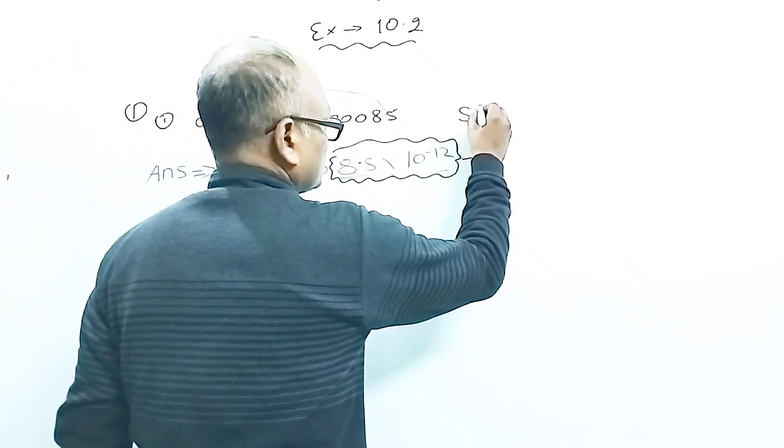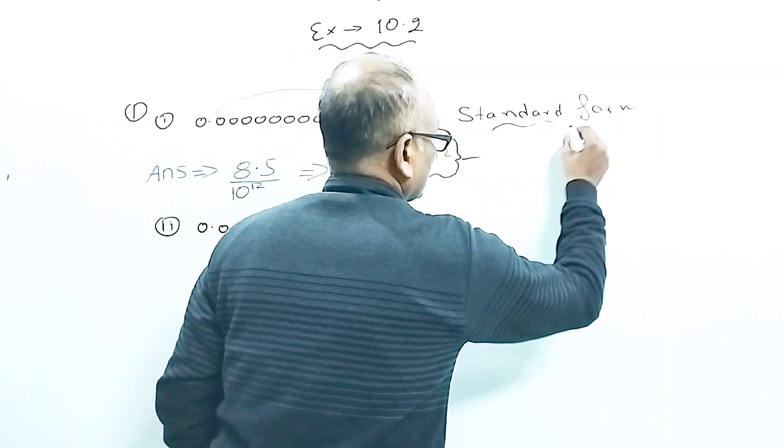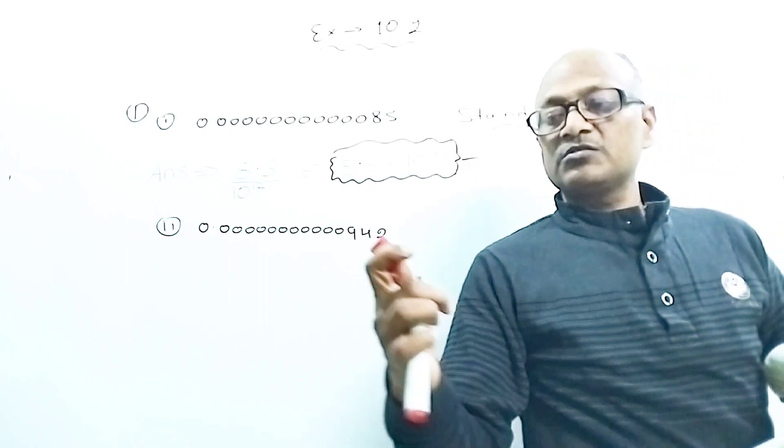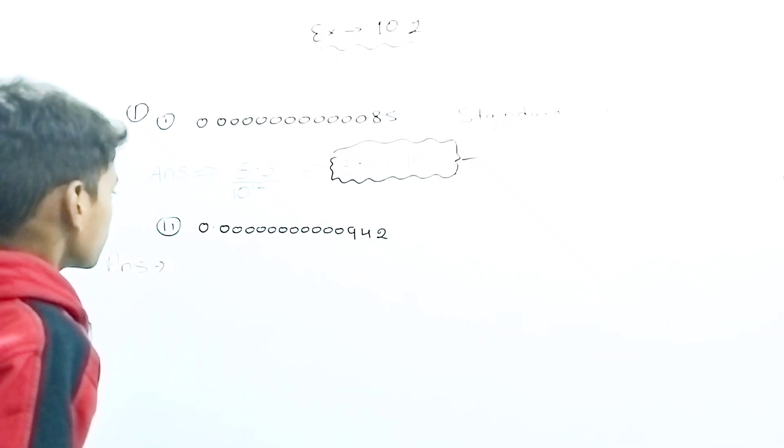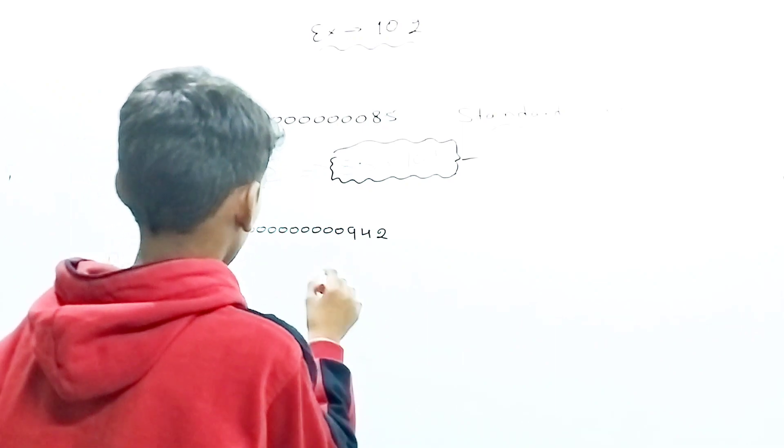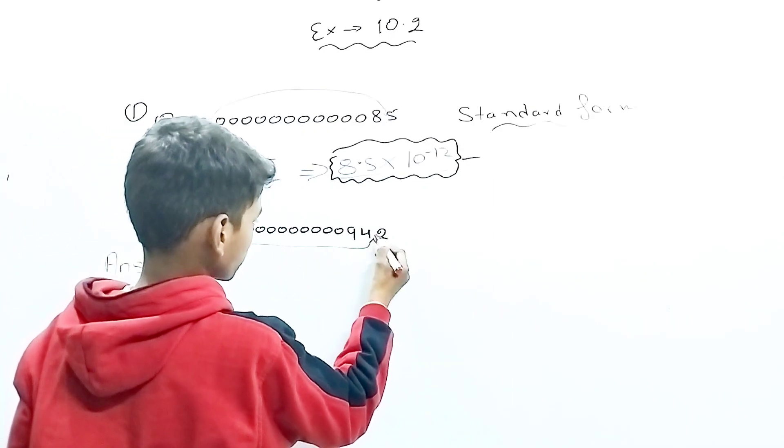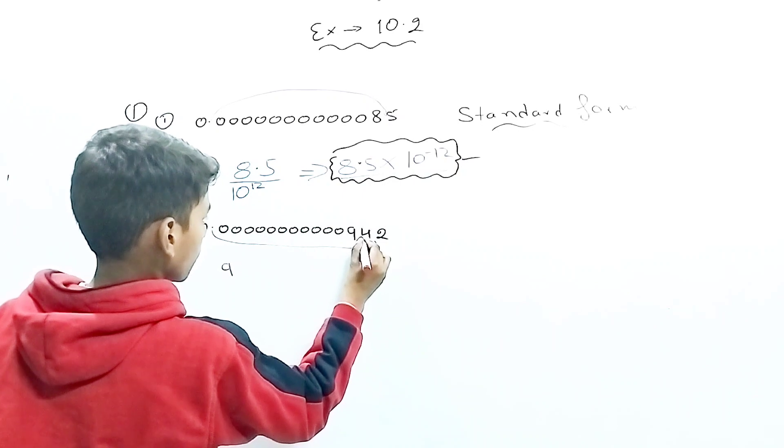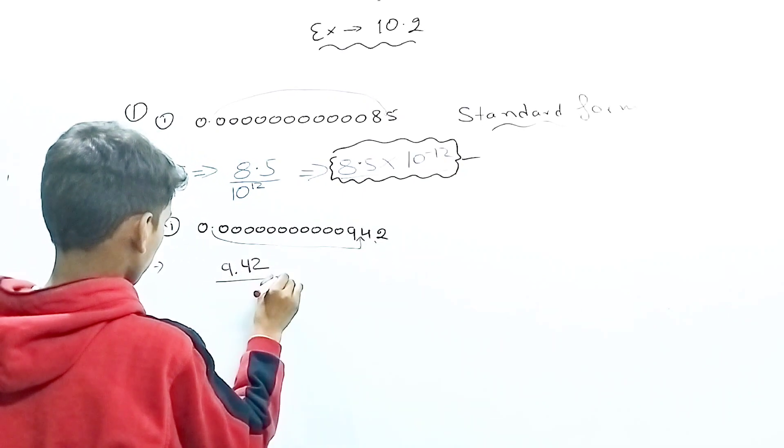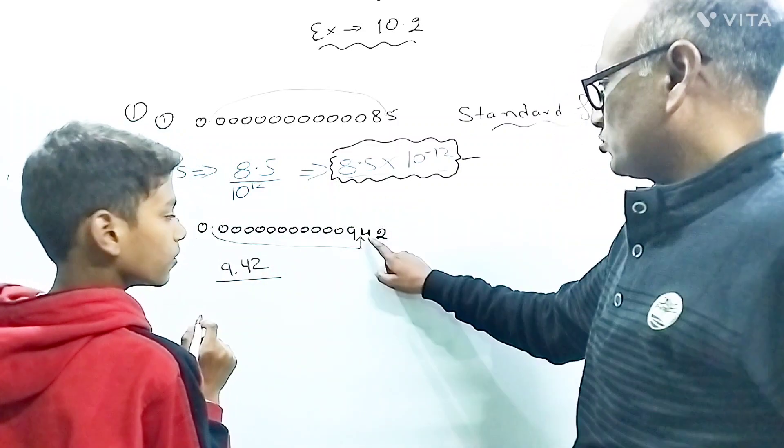So as you know, if we want to convert any number into standard form, we have to take this point here at the last digit. So we can write it as nine point four two upon - you are correct. This should not be, yes you are doing here. That means only one digit should be in the left side. So not here, here should be. Yes, continue.